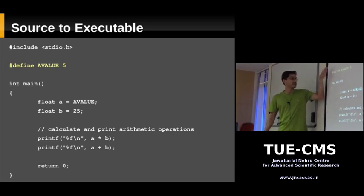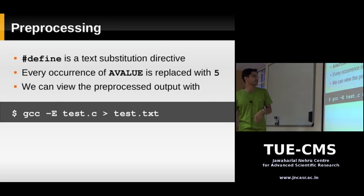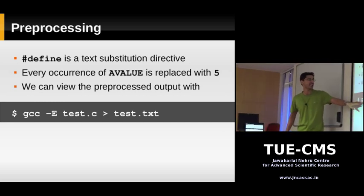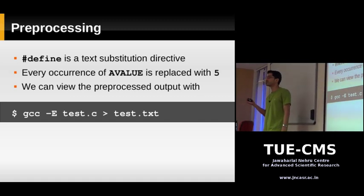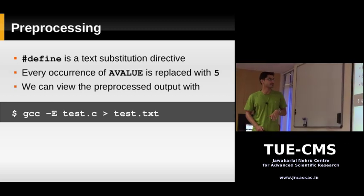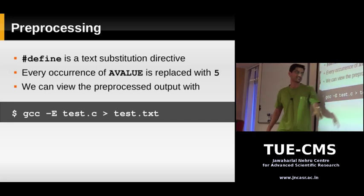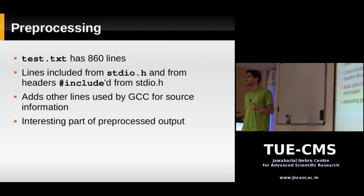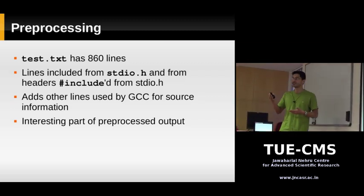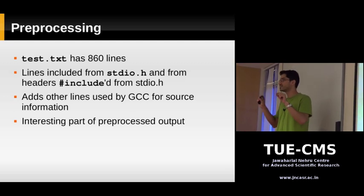So suppose you want to see what your preprocessed source code looks like. You would give the gcc -E option, and it's going to write the preprocessed output to standard output. Since it's writing to standard output, we want to redirect it to a file so we can look at it later. We are taking the preprocessed output and writing it to test.txt. If you look at this txt file, it has 860 lines, because it included the contents of stdio.h and also the files which stdio.h itself included.